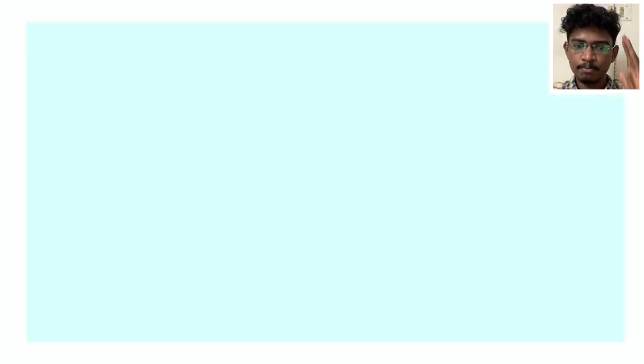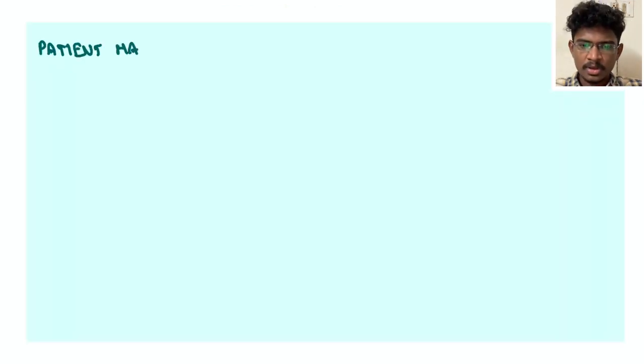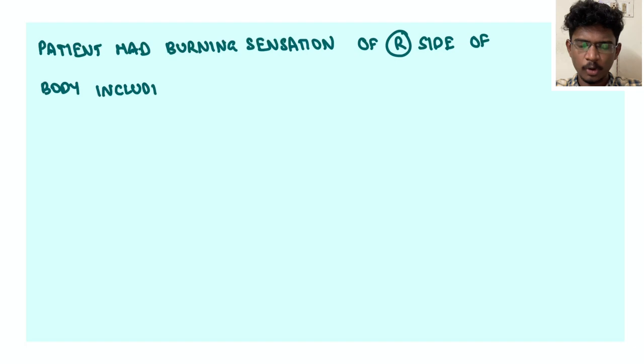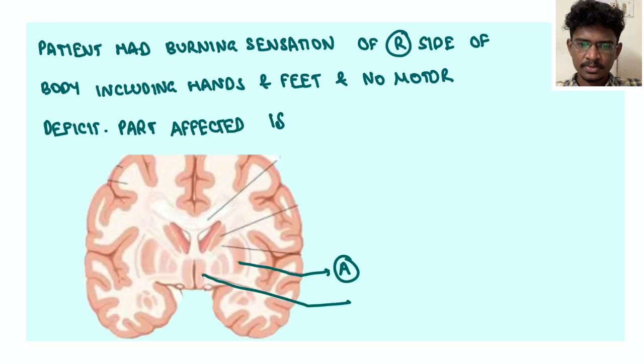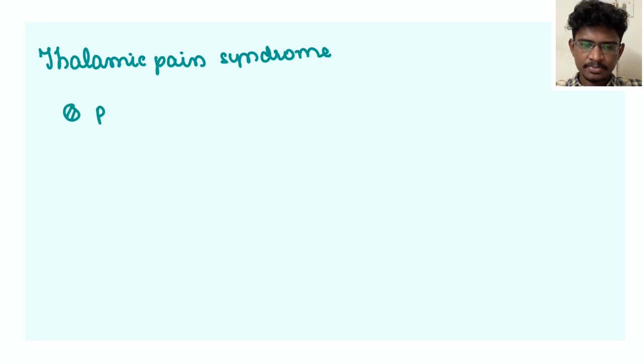Patient having severe burning-like pain on the right half of the body, upper and lower limbs, and whenever you touch also the patient winces with pain. So which of the marked structure is affected in this disorder? This is nothing but the thalamic pain syndrome.